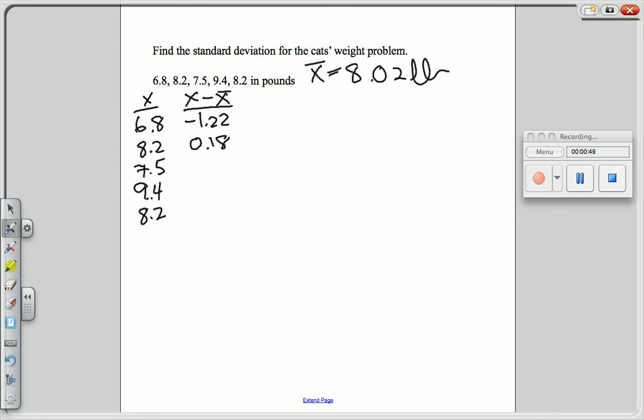7.5 minus 8.02 is negative 0.52, 9.4 minus 8.02 is 1.38, and 8.2 minus 8.02 is again 0.18.